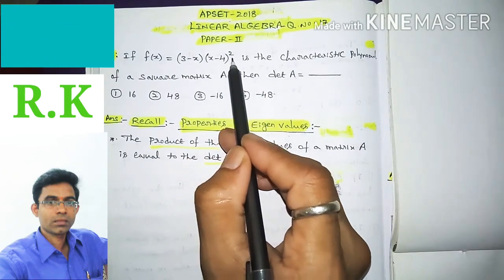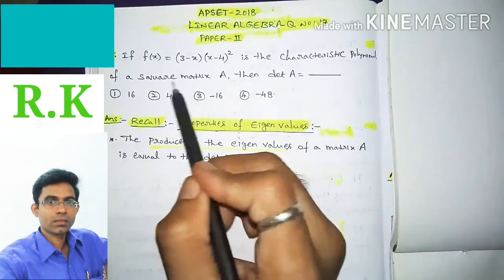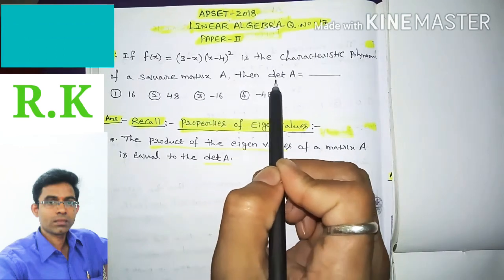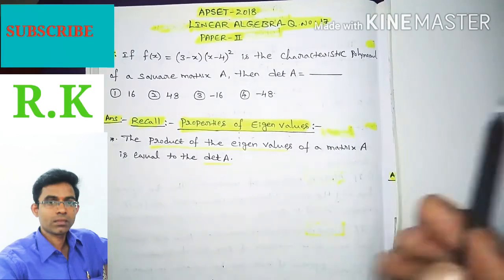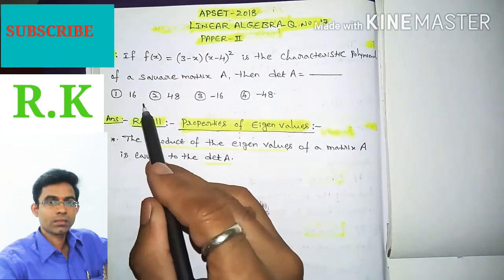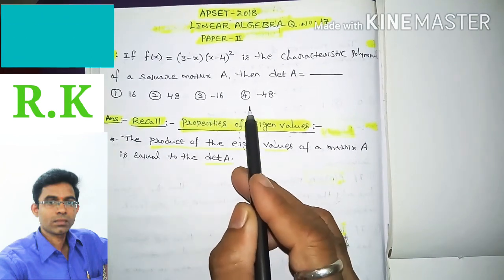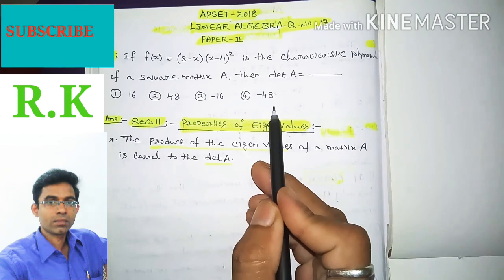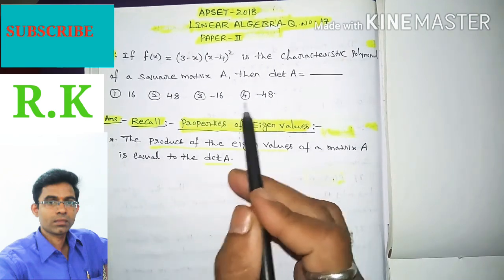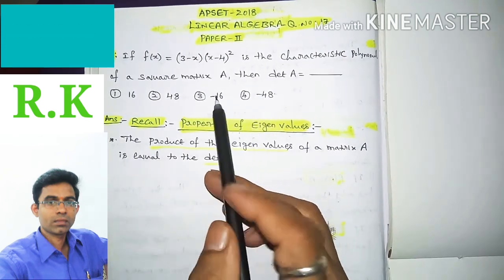The four options are: option number 1 is 16, option number 2 is 48, option number 3 is -16, and option number 4 is -48. So we have to choose one correct option from these four.